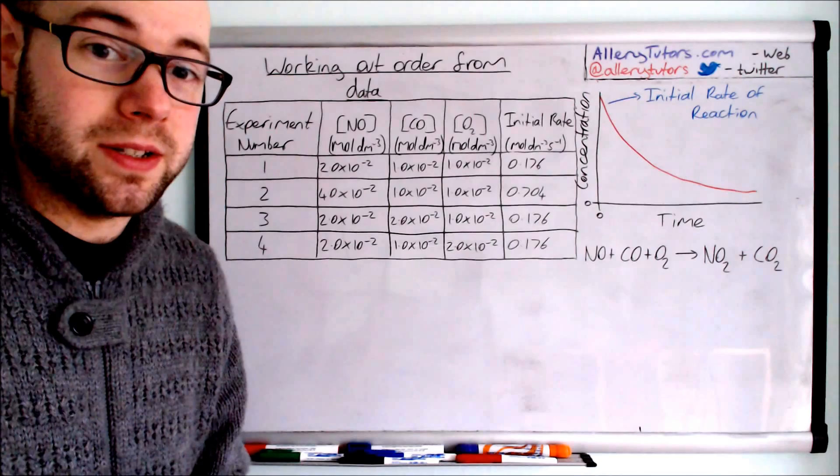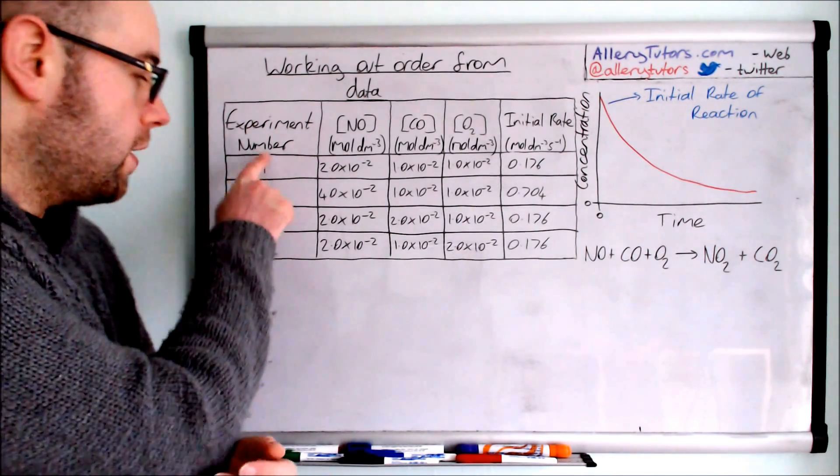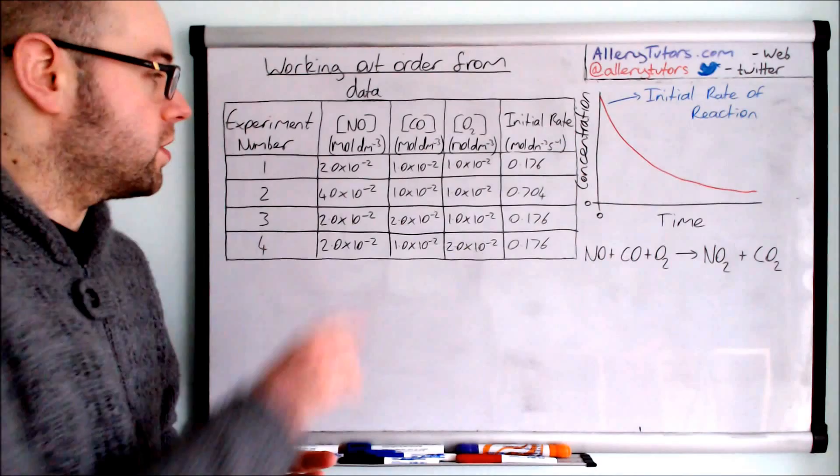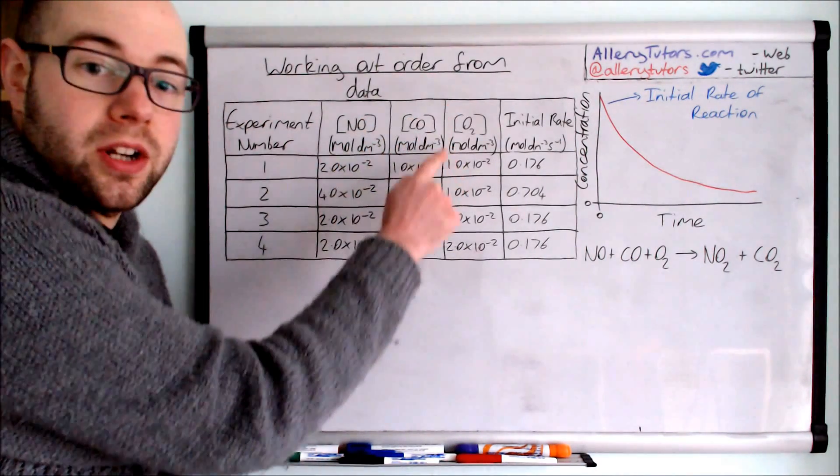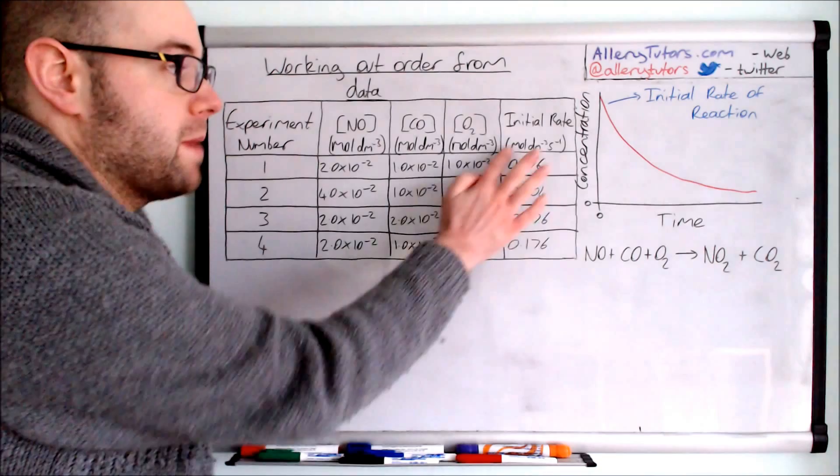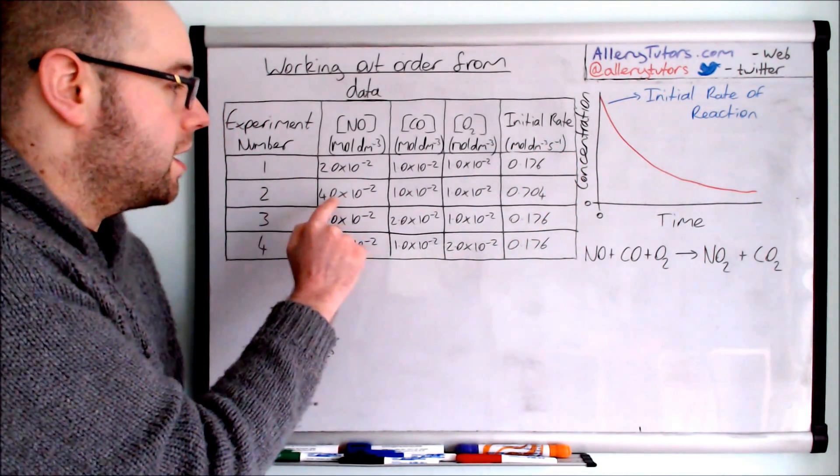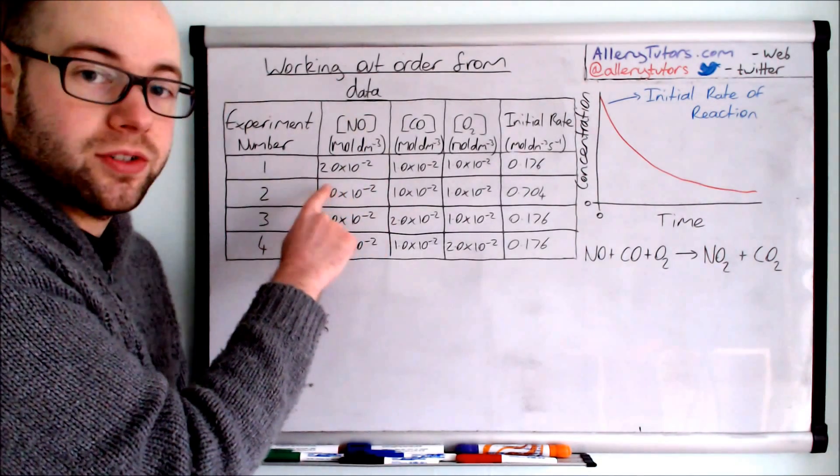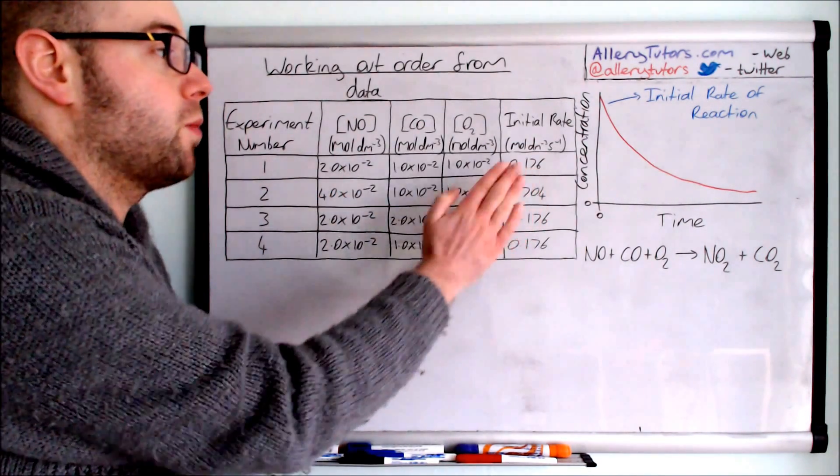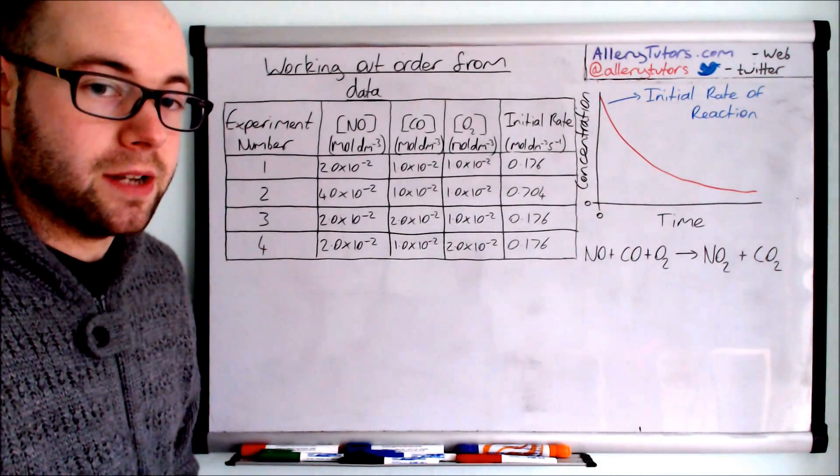What we've done is effectively we've changed the concentration and we've repeated this experiment four times. We've got the concentrations of nitrogen monoxide, carbon monoxide and oxygen and then we've measured the rate in moles per decimeter cubed per second. We've then repeated it but we've changed some of the concentrations. In this case the second one will change the concentration of NO and then we're looking at what effect does that have on the rate. This data can only be obtained when you do a practical.